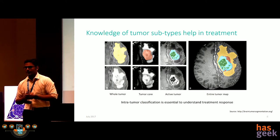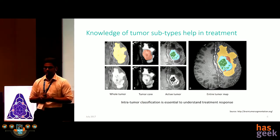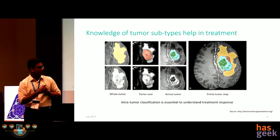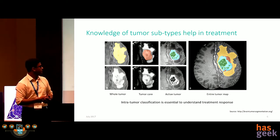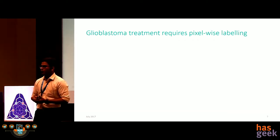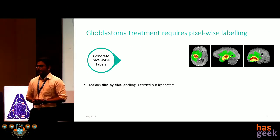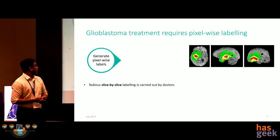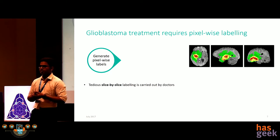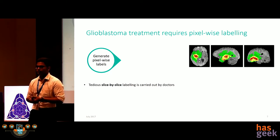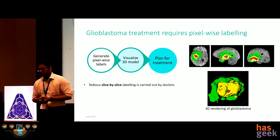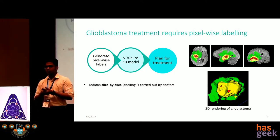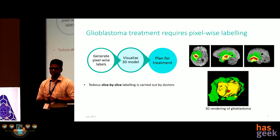When a patient is diagnosed with brain cancer, the doctor prescribes a course of treatment. After a few months, the patient comes for a rescan and an MRI is taken. The doctor analyzes how the different regions of the cancer are responding to treatment — that is extremely crucial for the patient's survival. This pixel-wise labeling is carried out by doctors and is extremely tedious, taking about two to four hours per scan. Once done, the doctor visualizes the cancer in a 3D virtual environment and plans treatment accordingly.